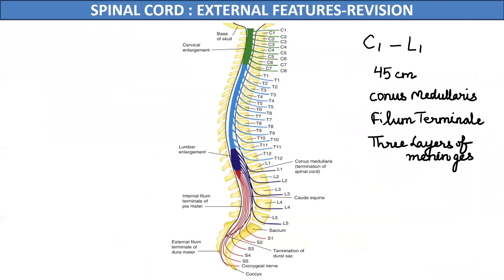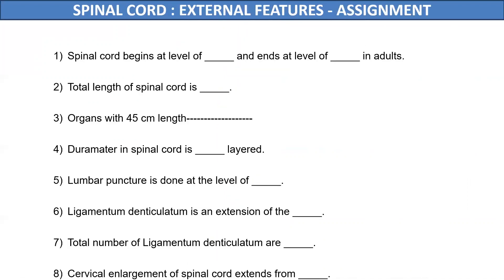To summarize: the spinal cord extends from the first cervical vertebra to the lower border of the first lumbar vertebra, with a total length of roughly 45 cm. The lower end of the spinal cord is conical and elongated as the conus medullaris, and beyond it the spinal cord continues as the filum terminale. The spinal cord is surrounded by three layers of meninges. Now you can check your knowledge by pausing this video for 10 seconds.